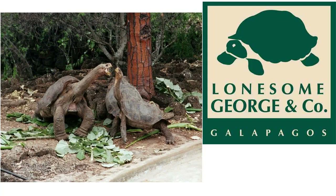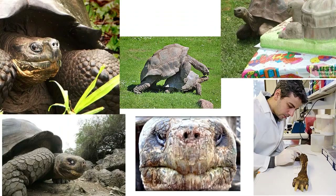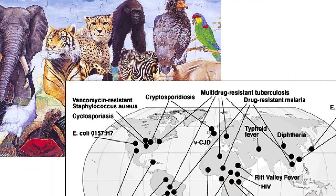Unfortunately for George, it was another male. Current efforts are underway to see if George and the females from a related subspecies can create a hybrid offspring to preserve some of his genes. So far, they have been unsuccessful. Our understanding of how different groups of organisms are related to each other can benefit our stewardship of our planet, but it can also help to save human lives.